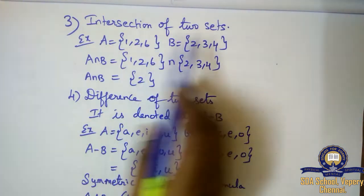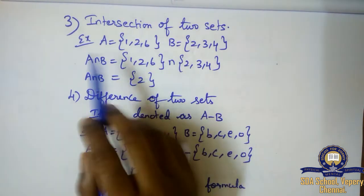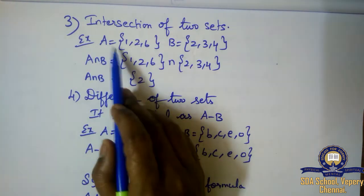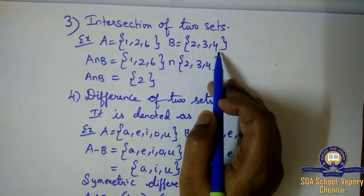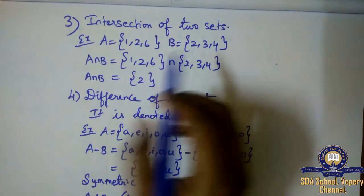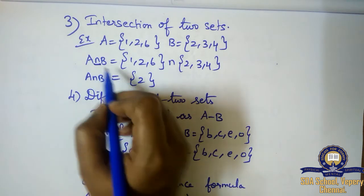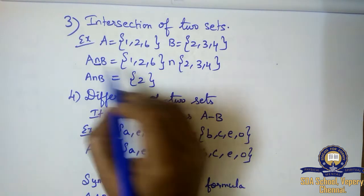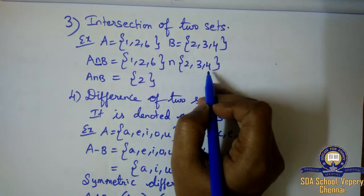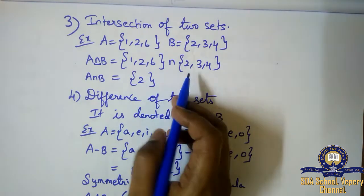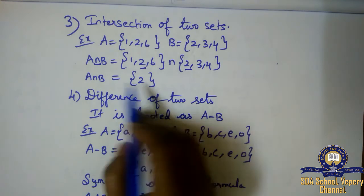Next we will see the intersection of two sets. Intersection means common elements from both the sets. Example: A is equal to {1, 2, 6} and B is equal to {2, 3, 4}. For union the symbol is U; for intersection the symbol is ∩. A intersection B — instead of A I have written 1, 2, 6, then intersection, then instead of B I have written 2, 3, 4. The common element in both is 2, so the answer is {2}.